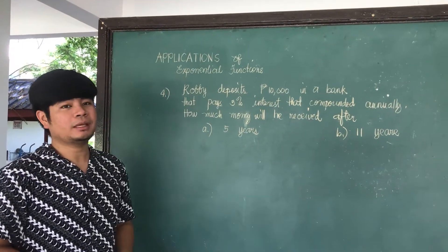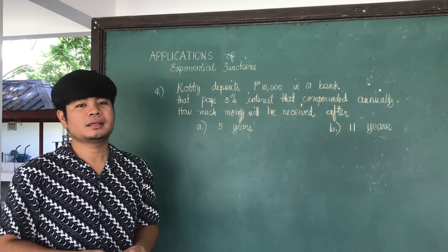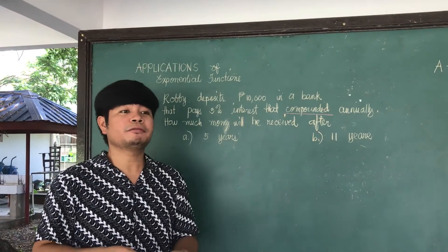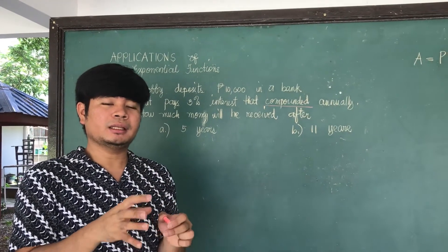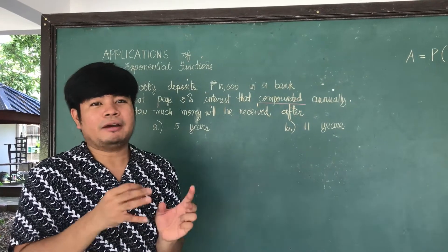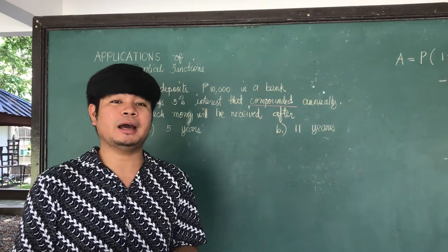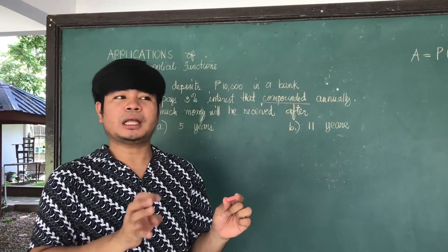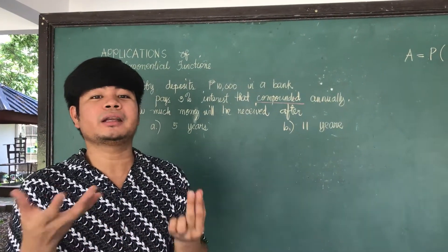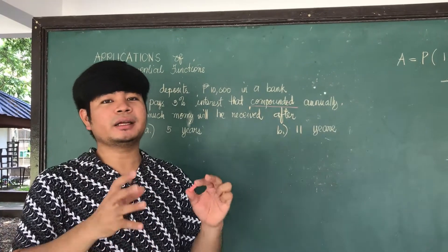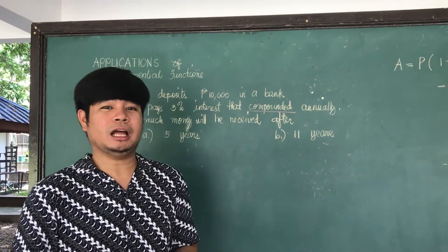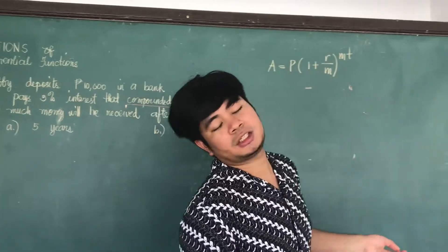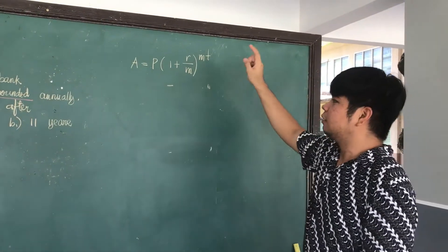Roby deposits 10,000 pesos in a bank that pays 3% interest compounded annually. Compound interest means every year the principal amount changes. For example, if 3,000 pesos increases, the new amount — say 4,500 pesos — becomes the principal for the next year. Every year the initial amount changes; that is what we call compound interest, which illustrates exponential functions.